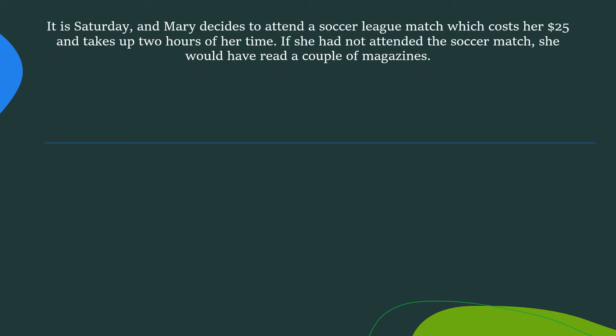Let's look at a few examples of opportunity cost. It is Saturday and Mary decides to attend a soccer league match which costs her $25 and takes up two hours of her time. If she had not attended the soccer match, she would have read a couple of magazines. So let's break down this example. Mary already decides that she's going to attend a soccer league match and that is going to cost her $25 and take up two hours of her time. If she had not attended, she would have read a couple of magazines, and reading magazines will be her best alternative.